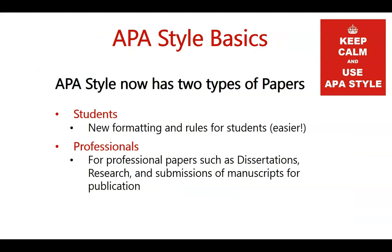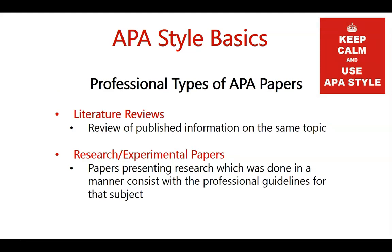APA has two general types of papers: the student format and the professional one, which includes dissertations, research, and submissions of manuscripts for publication. In the professional types, two important categories are literature reviews — where you find all published information on a particular topic — and research or experimental papers that present actual research. In fields like education, business, sociology, and library science, research methods typically involve surveys, interviews, and similar approaches rather than laboratory techniques.